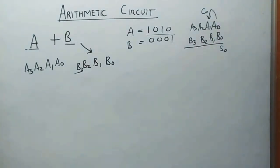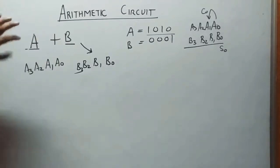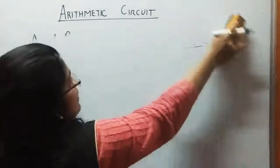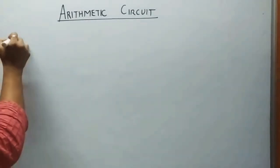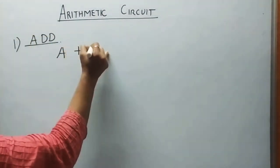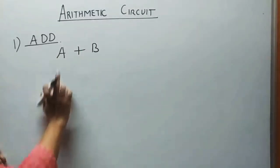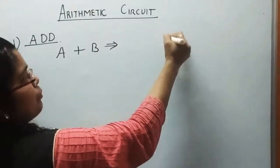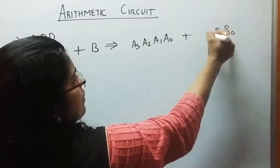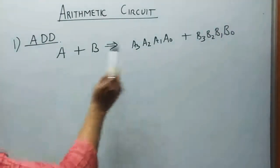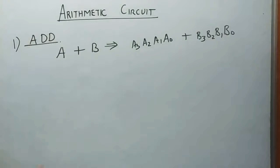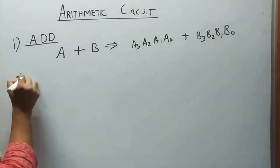This is the simple phenomenon for a 4-bit number. A represents a 4-bit number and B represents a 4-bit number. There are many arithmetic operations. The first operation is Add. The add operation means A plus B, which implies applying a0, a1, a2, a3 plus b0, b1, b2, b3.